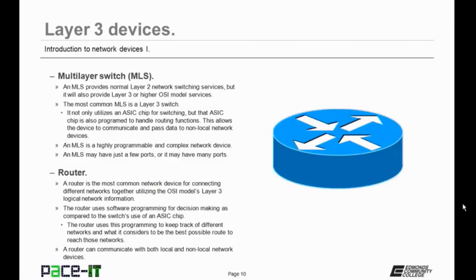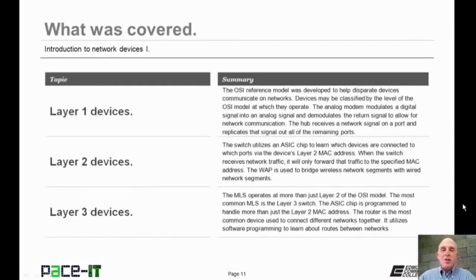Now let's move on to the router. A router is the most common network device for connecting different networks together, utilizing the OSI model's layer 3 logical network information — that's what makes a router a layer 3 device. The router uses software programming for decision making, as compared to the switch's use of an ASIC chip. The router uses this programming to keep track of different networks and what it considers to be the best possible route to reach those networks. A router can communicate with both local and non-local network devices. In most cases, a router will have fewer ports than a switch.